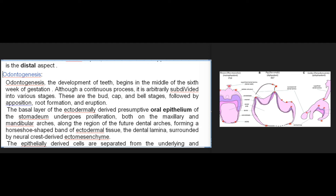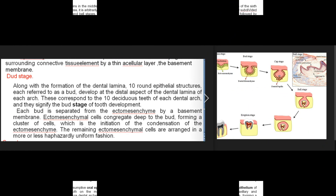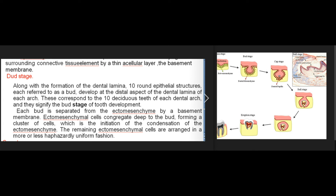This horseshoe-shaped band, the dental lamina, is surrounded by neural crest-derived ectomesenchyme. The epithelially derived cells are separated from the underlying connective tissue by a thin acellular layer, the basement membrane. In the bud stage, along with the formation of the dental lamina, ten round epithelial structures each referred to as a bud develop at the distal aspect of the dental lamina of each arch. These correspond to the ten deciduous teeth of each dental arch.